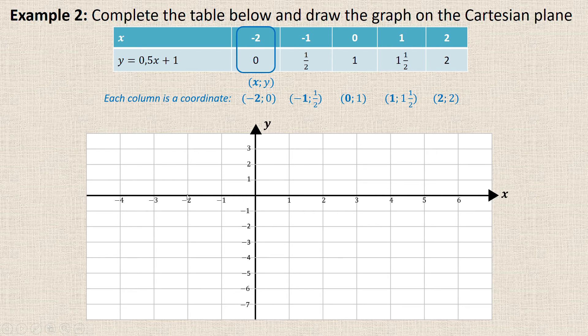Again I'm going to start, so I move across to negative 1 and up to a half, so it's somewhere there. Then I'm going to move across to 0, so I don't need to move across, and up to 1. And then I do the same for the other coordinates. I've put in all my points.